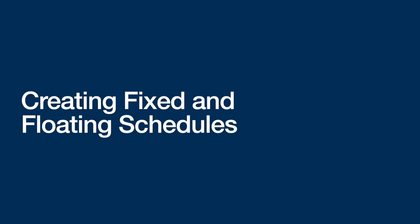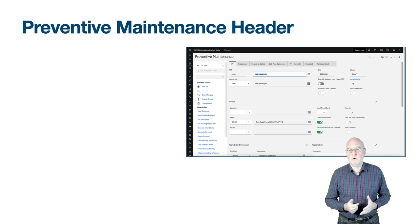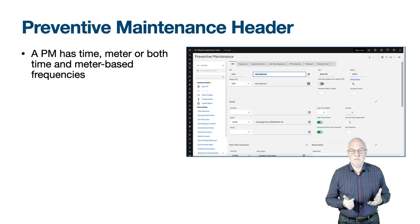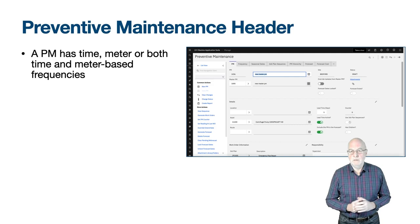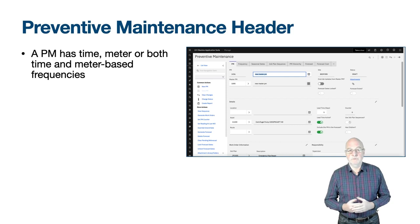The preventive maintenance application is used for any requirement to generate work orders on a frequency basis — either time, meter, or a combination of time and meter. It is used for the generation of preventive maintenance and inspection work orders. The work performed is normally defined on a job plan, but PMs can generate work orders without a job plan, and PMs need not have any frequency details — something I call an on-demand PM.